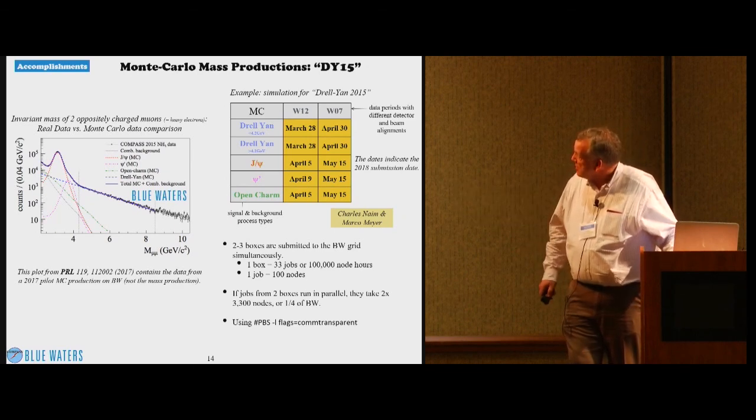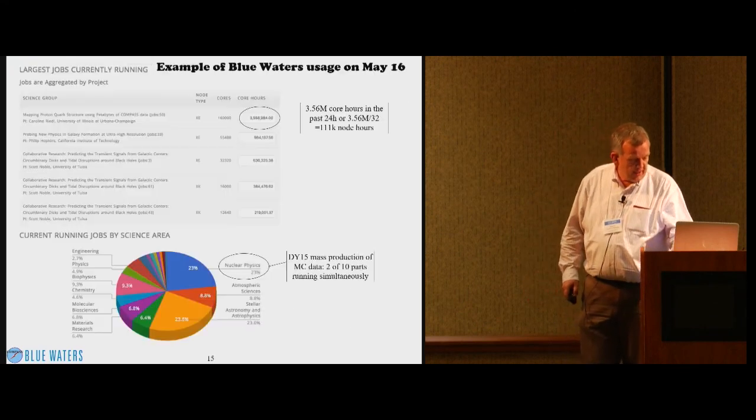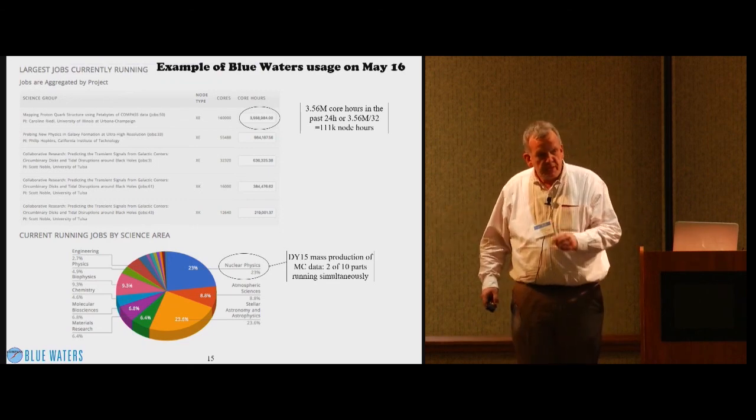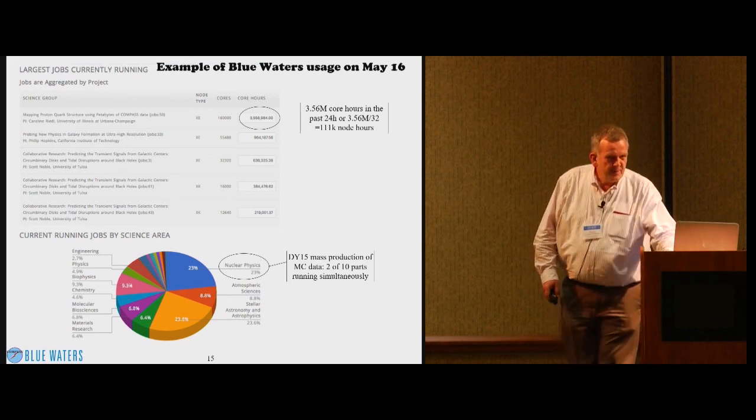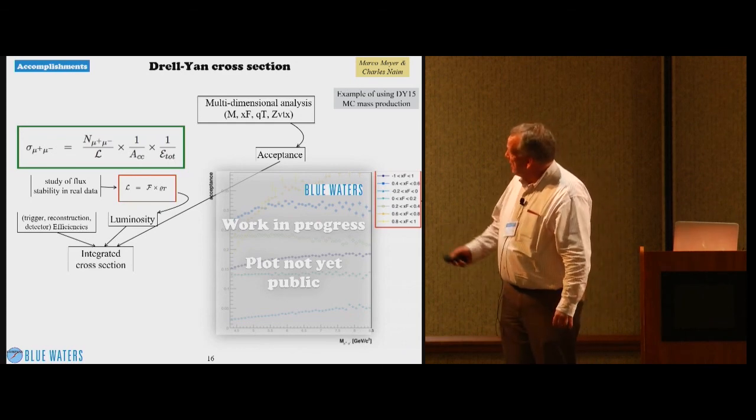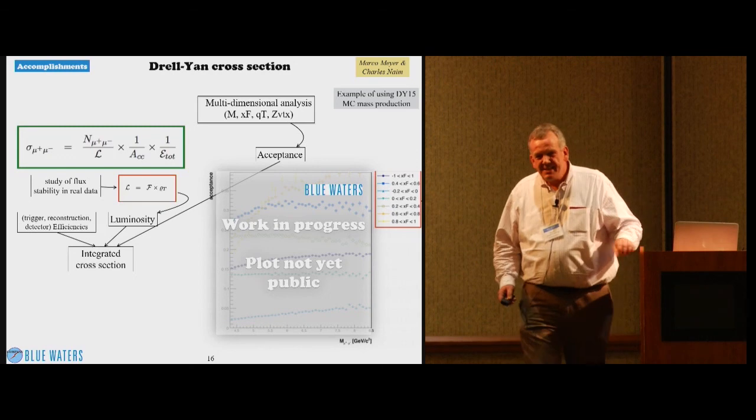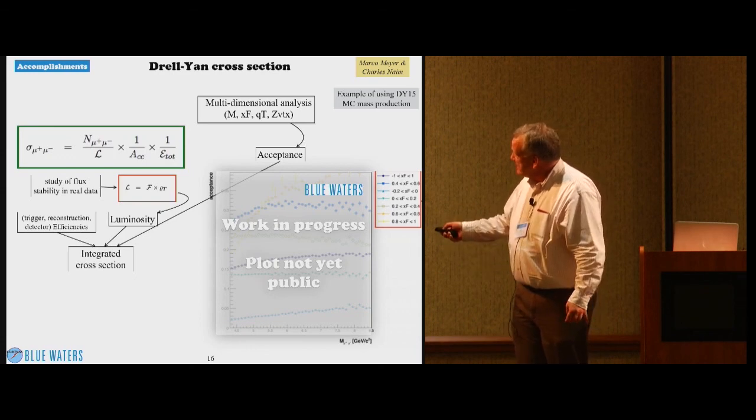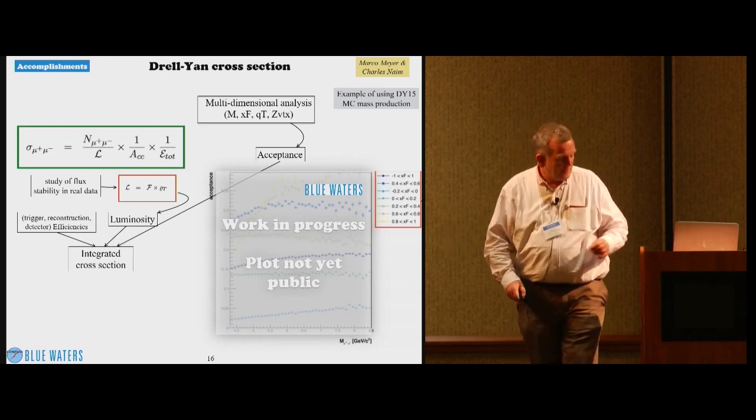So for the first time we have this precision Blue Waters data available for understanding our systematic errors. This here is a schedule that shows how Monte Carlo for different background channels was produced in March, April and May. A scheme very similar to the one I showed for data production. So when this is underway it uses between 20 and 25 percent of the CPUs at Blue Waters. Of course that's not running at all times. This also is being used in our Drell-Yan cross-section analysis. This is a prime example where we have now enormous statistics in measuring acceptances, detector performance that affect our analysis in many different dimensions. So it's a five dimensional analysis.